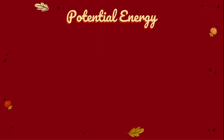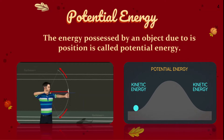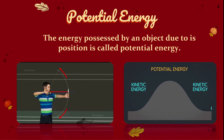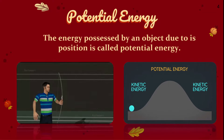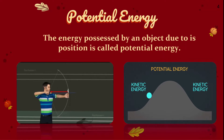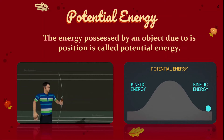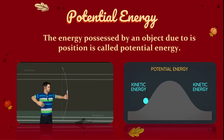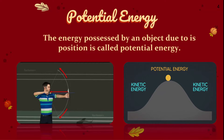First, let us see what is potential energy. The energy possessed by an object due to its position is called potential energy. Look at the first diagram — in this GIF, a man is aiming with a bow and pulling the arrow backwards. Here, the potential energy is converted into kinetic energy. Due to its position, the arrow has some energy, and once he releases the arrow, the potential energy is converted into kinetic energy.